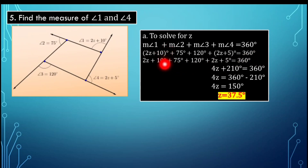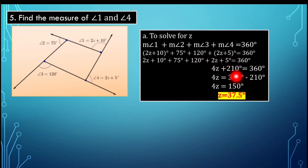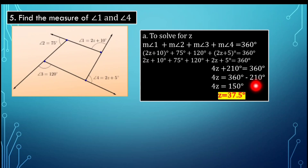Removing the parentheses, we can see like terms: 2Z and 2Z combined give 4Z, while 10 plus 75 plus 120 plus 5 equals 210. So 4Z plus 210 equals 360 degrees. Transferring 210 to the other side: 4Z equals 360 minus 210, which is 150. To get the value of Z, we divide both sides by 4. So Z equals 150 divided by 4, which gives 37.5.